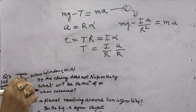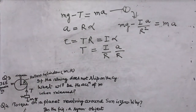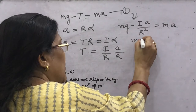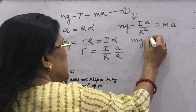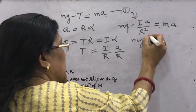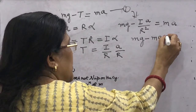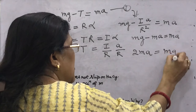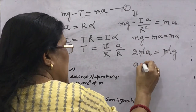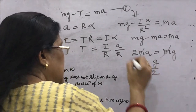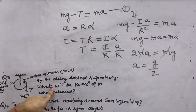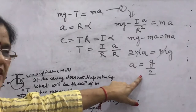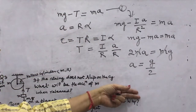For a hollow cylinder, the moment of inertia is I = mr². Substituting: mg − mr²·a/r² = ma, which gives mg − ma = ma, so mg = 2ma, therefore a = g/2. The acceleration with which the mass comes down is g/2. With the help of these three equations, we got the answer.